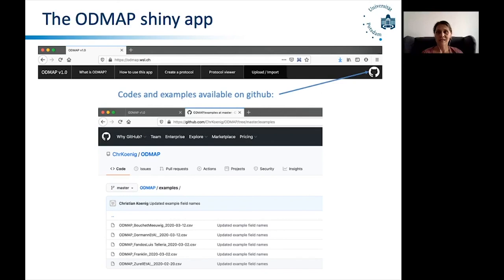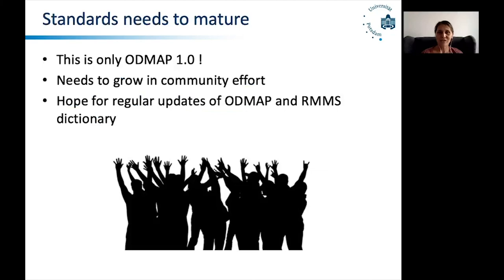All of the codes are open access on the GitHub account and you can also see examples there for the OTMAT protocol, download them, and load them into the Shiny app to see how it works. I want to stress that this is just OTMAT 1.0 and it definitely needs to grow in a further community effort. We will have to see not only what bugs are still contained in the Shiny app, but also what kind of elements are working okay, which elements need refinement, which elements may prove obsolete, and so on. Similar to the update of the ODD protocol, we are hoping that we can make regular updates of OTMAT and also of the RMS dictionary to really grow in a community effort.